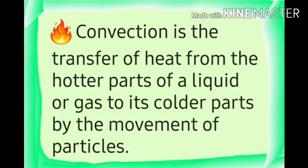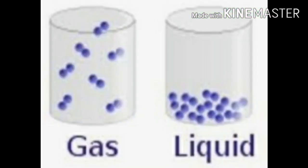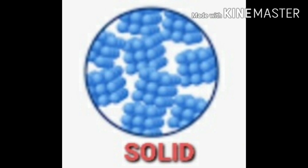Today, we can study about convection. Convection is the transfer of heat from the hotter parts of a liquid or gas to its colder parts by the movement of the liquid or gas itself. The transfer of heat by convection can take place only in liquids and gases because the particles in liquids and gases can move about freely. The transfer of heat by convection cannot take place in solids because the particles in solids are fixed at a place and hence cannot move about freely.